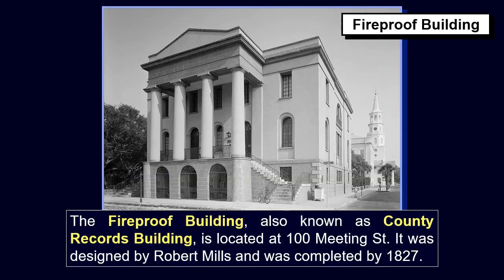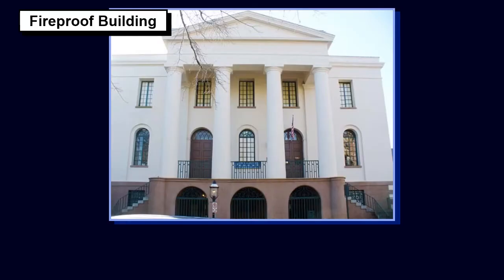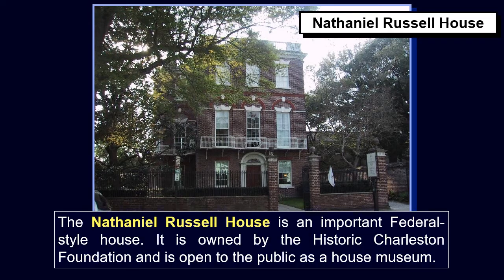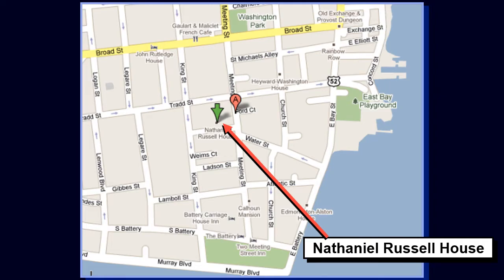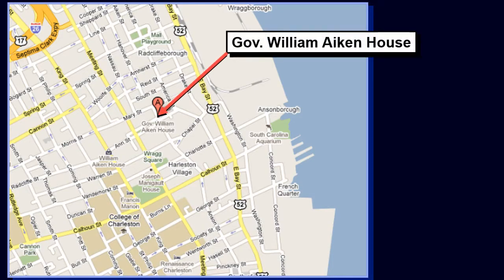The Fireproof Building, also known as the County Records Building, is located at 100 Meeting Street. It was designed by Robert Mills and completed by 1827. At that time, it was the most completely fireproof building in America, and is believed to be the oldest fireproof building in America today. Currently, the Fireproof Building houses the South Carolina Historical Society, a membership-based reference library open to the public. The Nathaniel Russell House is an important federal-style house owned by the Historic Charleston Foundation and open to the public as a house museum. The Governor William Aiken House, also known as the Aiken-Rutt House, is a home built in 1820.